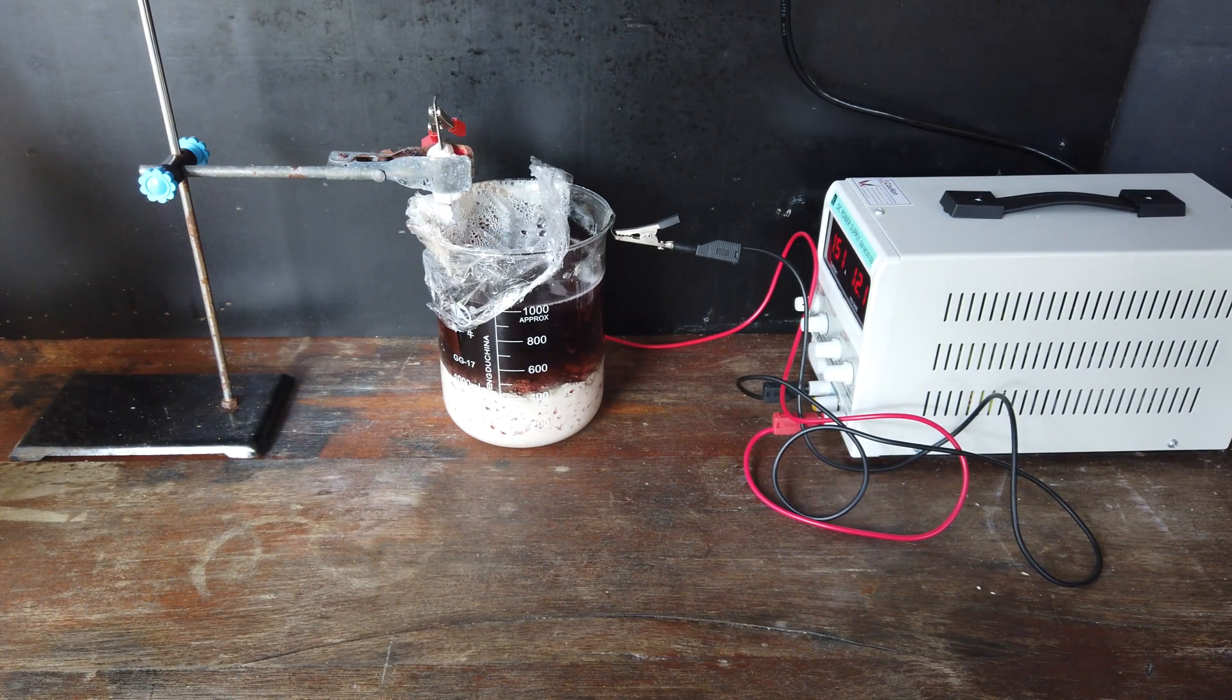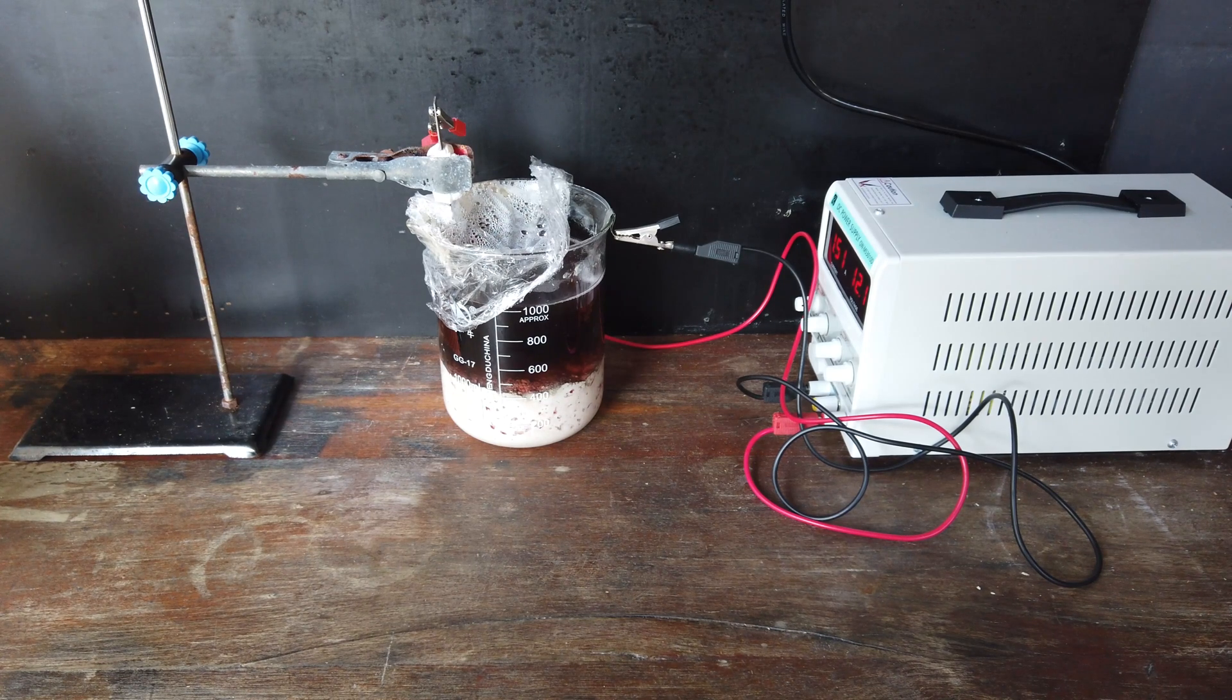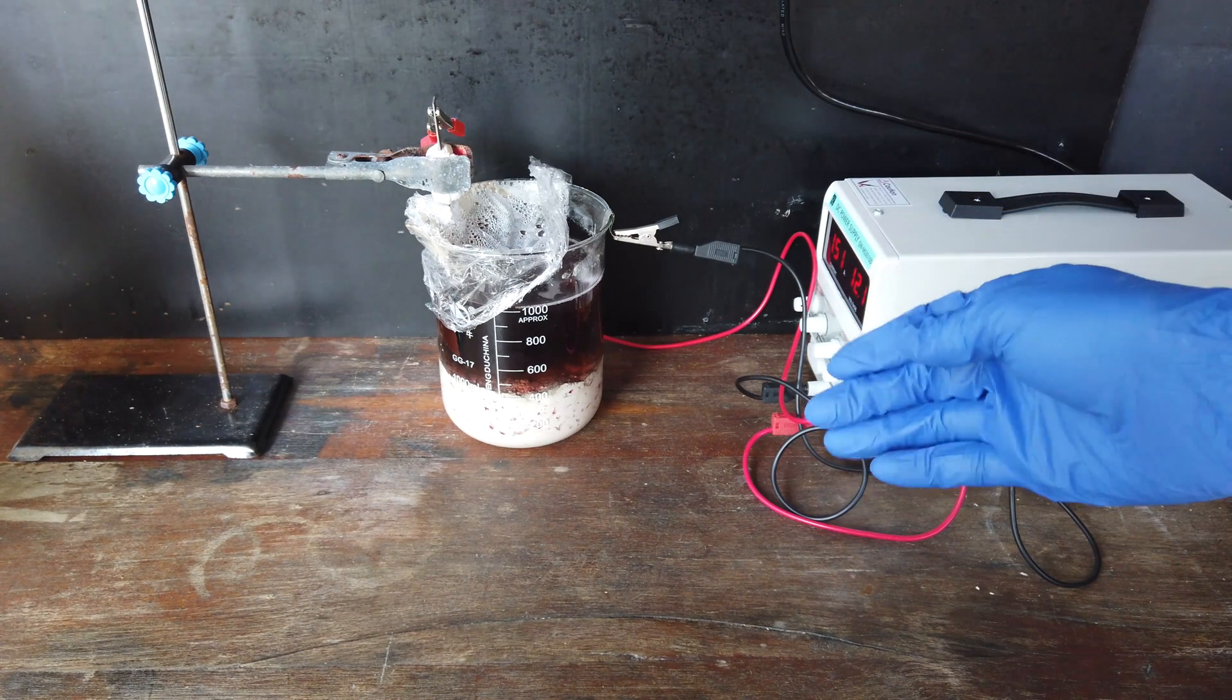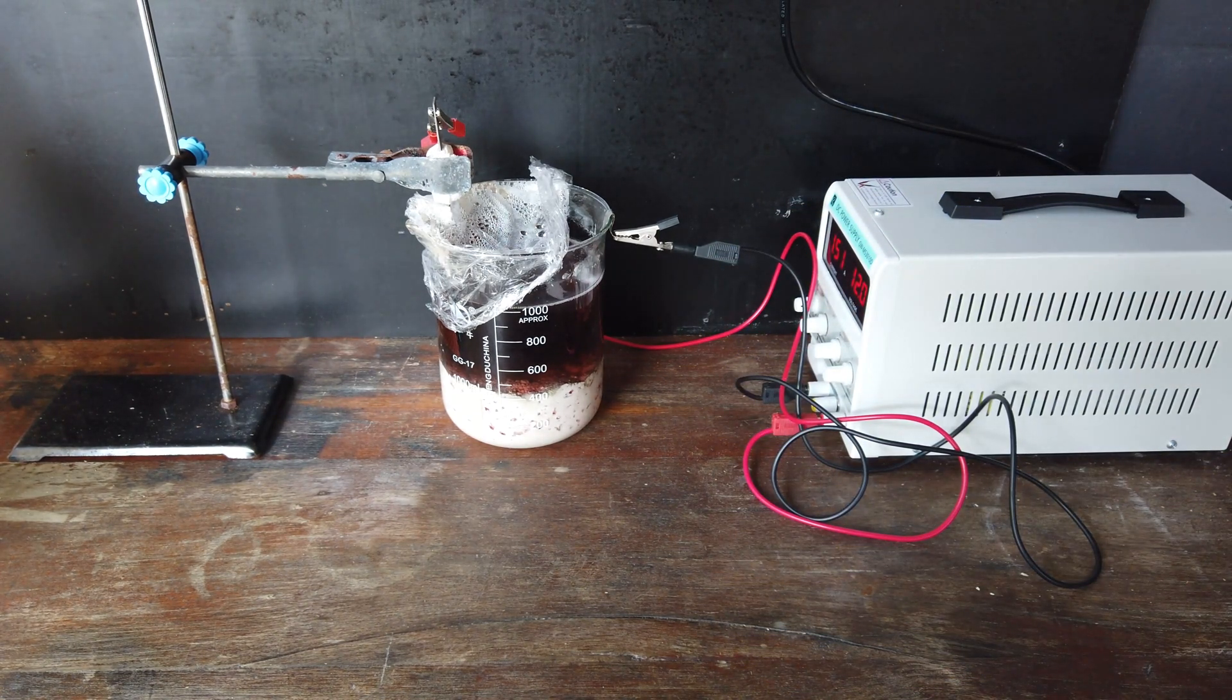But now that everything is proceeding nicely and we can see it is slowly working. It's not very efficient, but it is working. I'm going to leave this going at 1.5 amps for however long it needs to electrolyse out most of that cobalt and nickel.